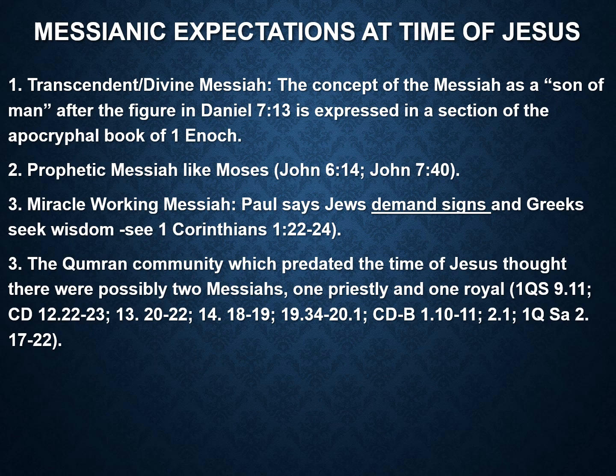At the time of Jesus there were several Messianic expectations, not just one. There seems to be a transcendent or divine Messiah expectation based on the 'Son of Man' in Daniel 7:13 and 1 Enoch, which Jesus uses continually in his ministry. There seems to be an expectation of a prophetic Messiah like Moses, as seen in John. Paul says in 1 Corinthians 1:22-24 that 'Jews demand signs,' suggesting an expectation for a miracle-working Messiah. The Qumran community thought there might be two Messiahs — one priestly and one royal. We don't want to oversimplify by thinking there was just one messianic expectation.